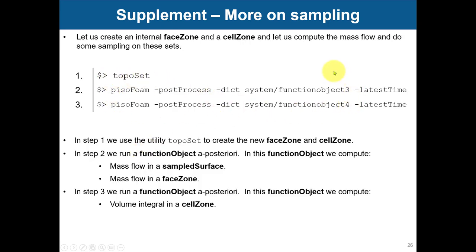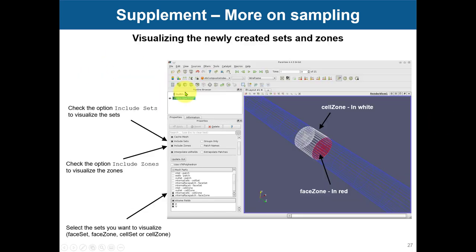In this case we have a posteriori function objects, and function objects three and four are the specific ones that will act on this topoSet selection. You can visualize the topoSet selection by going to ParaFoam — use ParaFoam, not the built-in option. When you use ParaFoam, you get access to options where you can include sets and zones, so you can now plot what you extracted using topoSet.